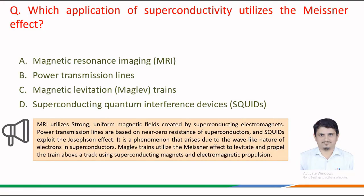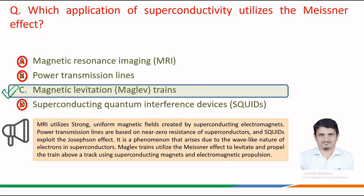MRI utilizes strong, uniform magnetic fields created by superconducting electromagnets. Power transmission lines are based on near-zero resistance of superconductors. SQUIDs exploit the Josephson effect, a phenomenon arising from the wave-like nature of electrons in superconductors. Maglev trains utilize the Meissner effect to levitate and propel the train above a track using superconducting magnets and electromagnetic propulsion. Therefore, the correct answer is option c — magnetic levitation.